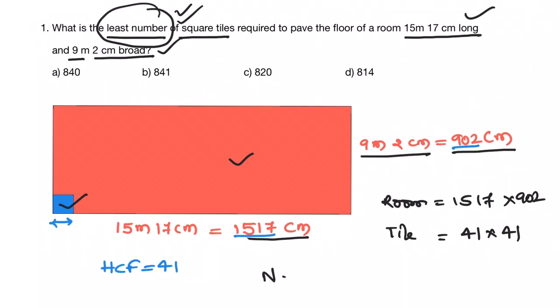Now number of tiles is equal to 1517 into 902 divided by 41 into 41. 41 ones are 41. This is equal to 814, because 37 twos are, last digit is 4. In the options, last digit is 4, so D is our answer. No need to multiply it fully.